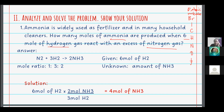Nitrogen exists as N2, and that is also true for hydrogen. So N2 plus H2 will give us ammonia, but you have to balance the equation. Once balanced, the equation is correct. What the problem is asking is the amount of ammonia if you have 6 moles of hydrogen.